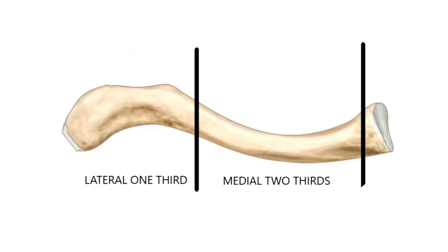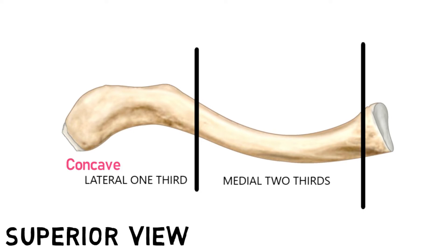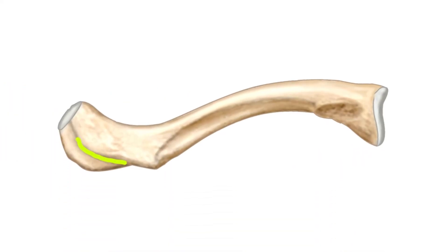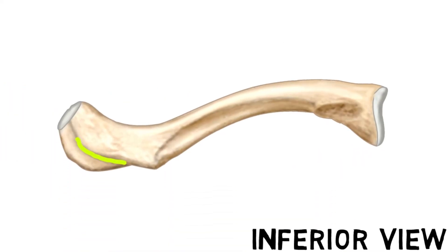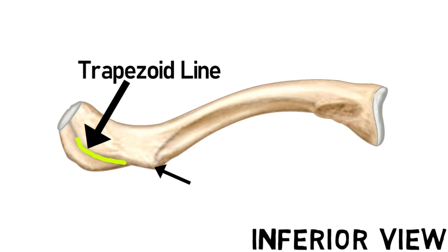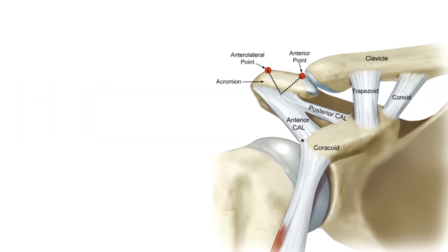As you can see, we have divided the clavicle into two parts: the lateral one-third and the medial two-thirds. This lateral part is concave, whereas the medial part is convex. To see other features, we need to look at the inferior view. So this yellow tracing is the trapezoid line, and this prominence is the conoid tubercle. These are the trapezoid and conoid ligaments, which are parts of the coracoclavicular ligament.